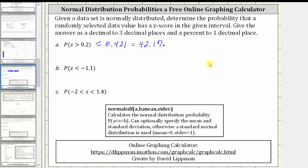For part B, we're asked to find the probability the z-score is less than negative 1.1. So now negative 1.1 is going to be the upper bound or the value of B. We'll have to exaggerate a very small negative number for the lower bound or A.